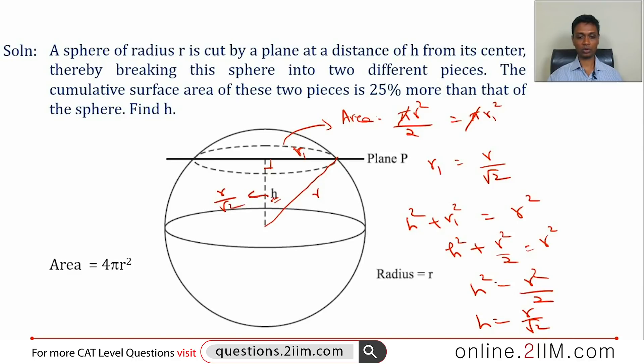h² is r² by 2, h is also r by √2. Or this distance is r by √2. So if you cut at a distance r by √2 from center of the sphere by a plane, we'll get two circles each of area πr² by 2, therefore resulting in a total increase in area of 25 percent.